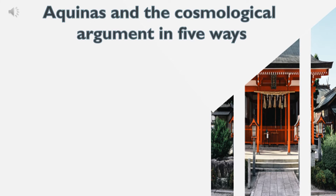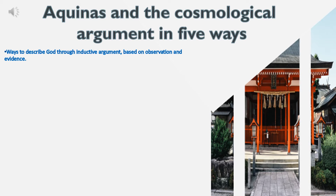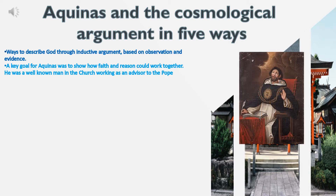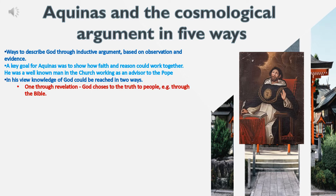Aquinas and the Cosmological Argument: five ways to describe God through inductive argument, based on observation and evidence. A key goal for Aquinas was to show how faith and reason could work together. He was a well-known man in the church, working as an advisor to the Pope. In his view, knowledge of God could be reached in two ways: one through Revelation, where God discloses the truth to people.